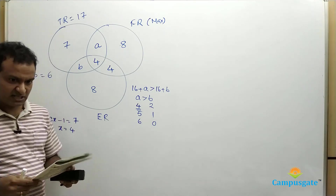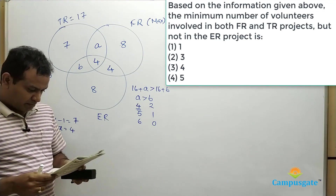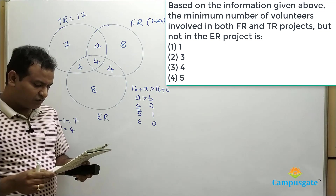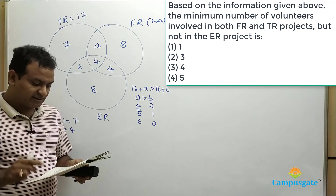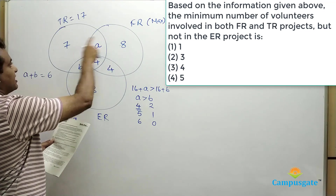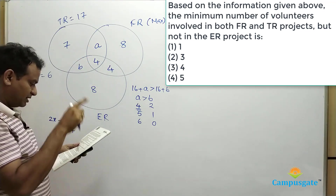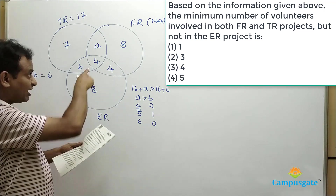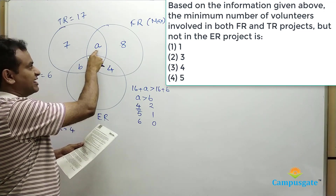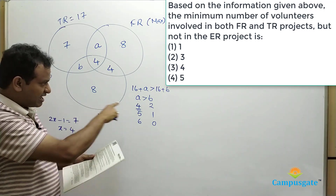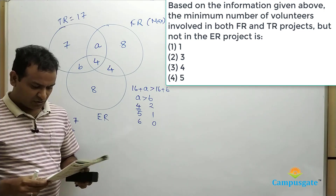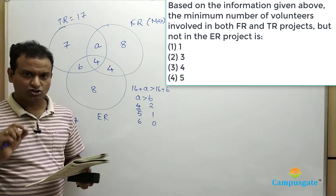Question 1: Based on the information given, what is the minimum number of volunteers involved in both FR and TR but not in ER? That means we are asked to find only the value of A. The minimum value of A equals 4. Therefore, the answer is option 3.